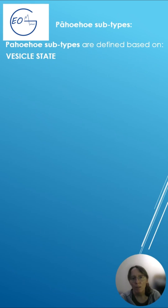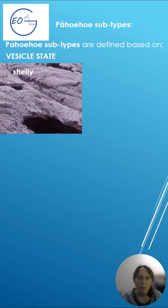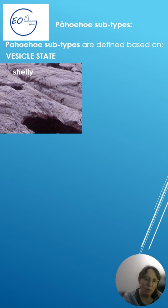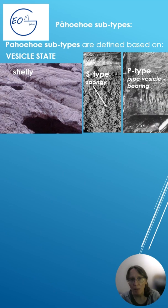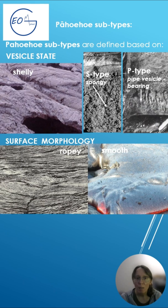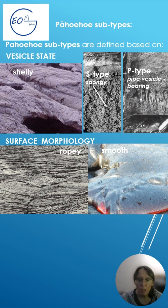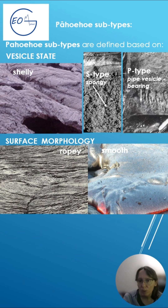Pahoehoe subtypes are defined based on vesicle state. We identify shelly, S-type with spongy interior structure, and P-type with pipe-shaped vesicle structure. Based on surface morphology, we distinguish ropey and smooth subtypes.